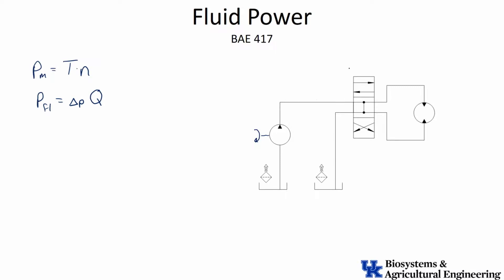The pressure is caused by whatever is going on downstream. Fluid moving through the system passes through a number of valves — a valve controls where the fluid goes, when it goes, and how much of it goes. We can control pressure for safety and other reasons. Typically, we then convert the fluid power back into mechanical power again. That symbol is a hydraulic motor — we take mechanical power, convert it to fluid power, and convert it back to mechanical power.